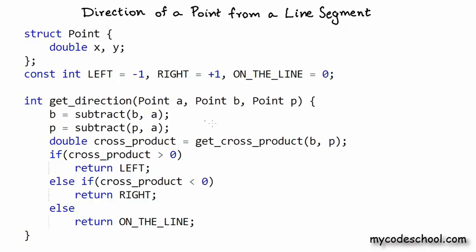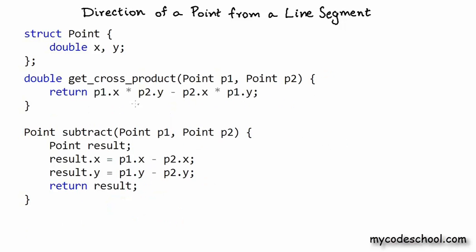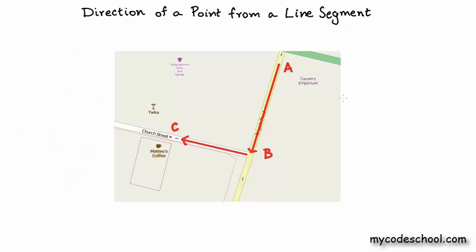The subtract and get_cross_product functions are quite simple. The get_cross_product function takes two points P1 and P2 and calculates the cross product using the formula we saw earlier. The subtract function takes two points P1 and P2 and returns a new point whose x and y values are P1 minus P2. In this video, we found how to solve the fundamental geometric problem of finding the direction of a point from a line segment — useful for applications like telling a user on an online map whether to take a right or left turn. Thanks for watching.